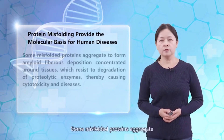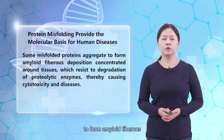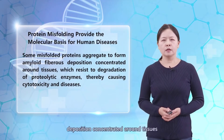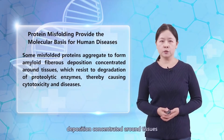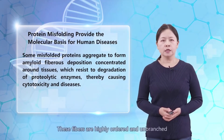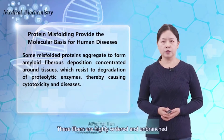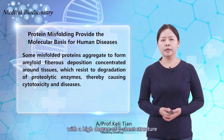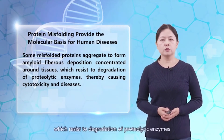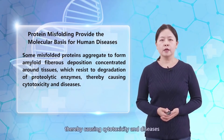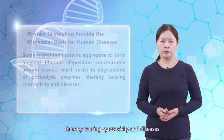Some misfolded proteins aggregate to form amyloid fiber depositions concentrated around the tissues. These fibers are highly ordered and unbranched, with a high degree of beta-sheet structure, which resists degradation by proteolytic enzymes, thereby causing cytotoxicity and disease.